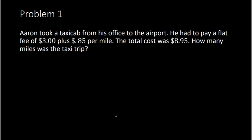Problem one says: Aaron took a taxi cab from his office to the airport. He had to pay a flat fee of $3 plus $0.85 per mile. The total cost was $8.95. The question is, how many miles was the taxi trip? So when you set up any equation, you want to begin with identifying what is your unknown — what are you trying to find? This question is asking for how many miles was the taxi trip. So the number of miles is your unknown, and we can let that be our variable. So x will equal the number of miles.